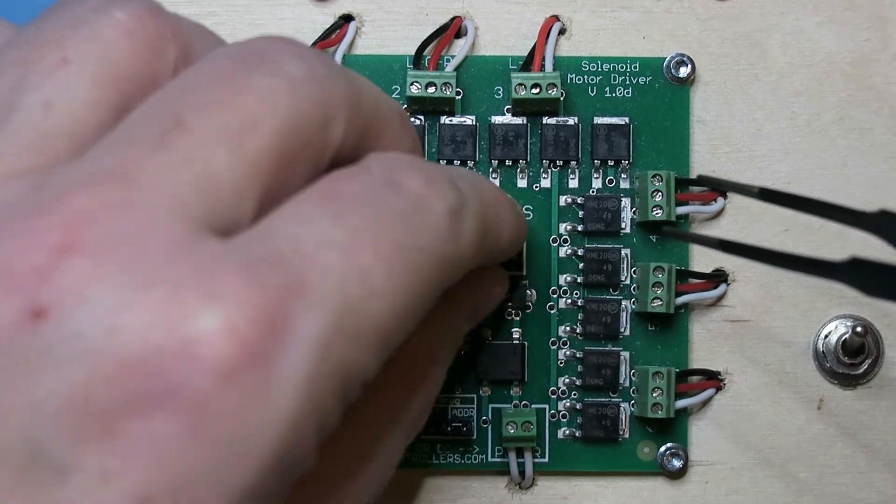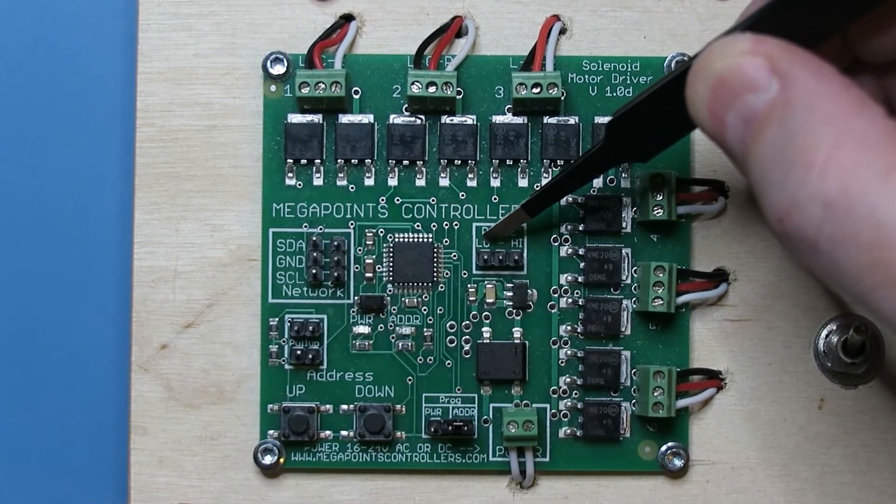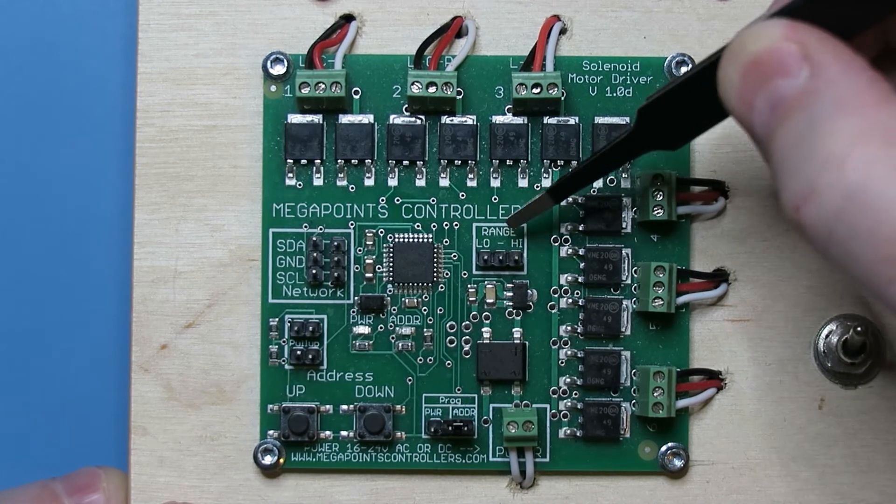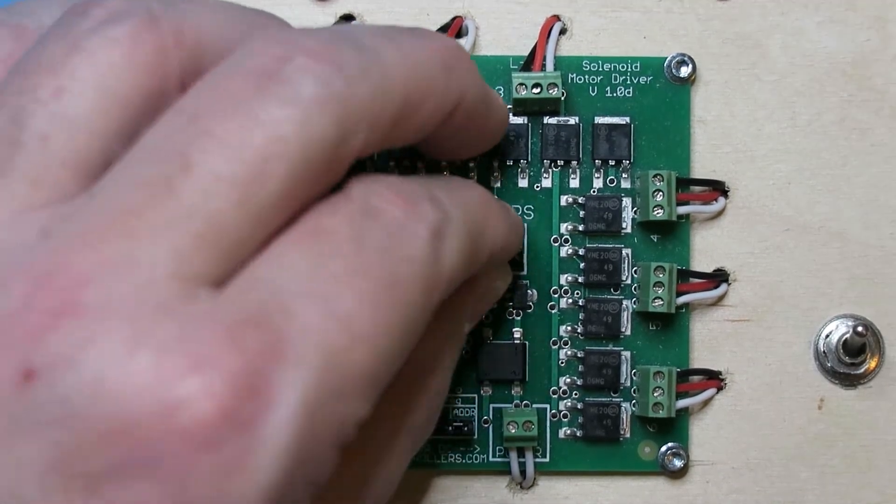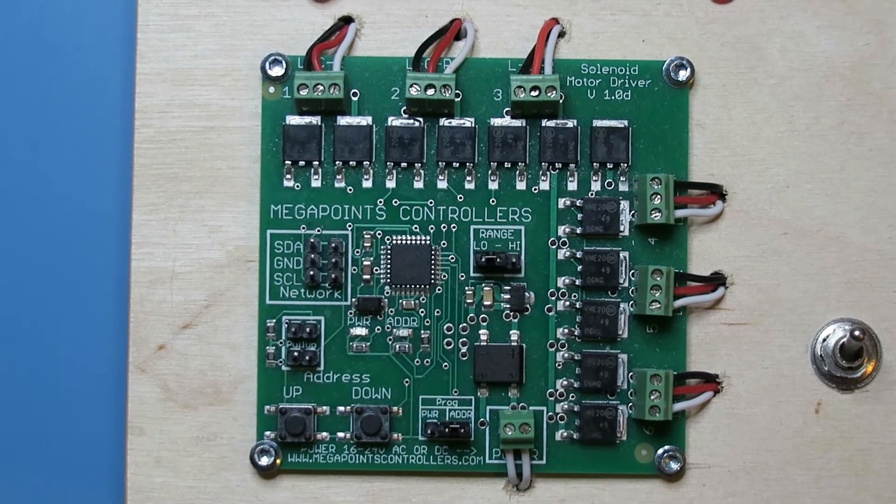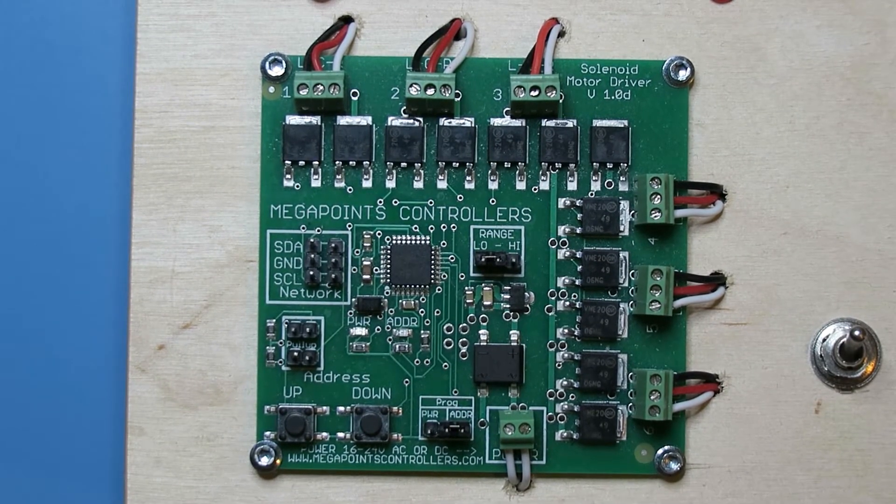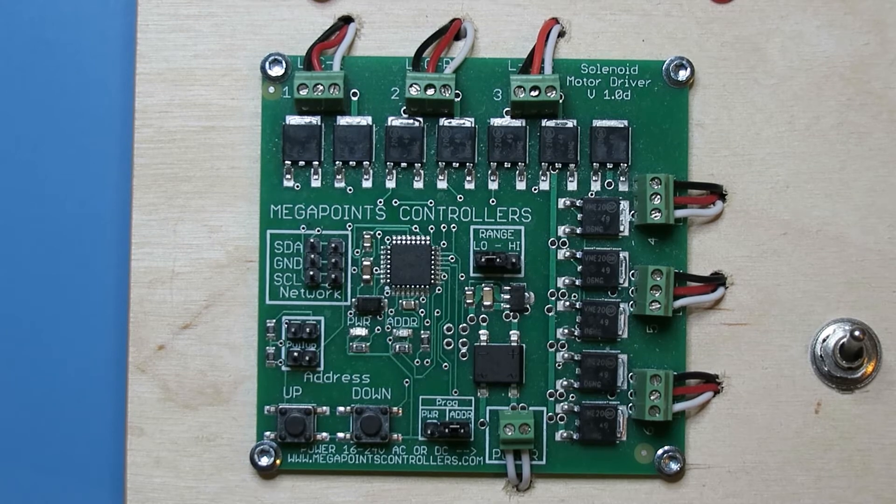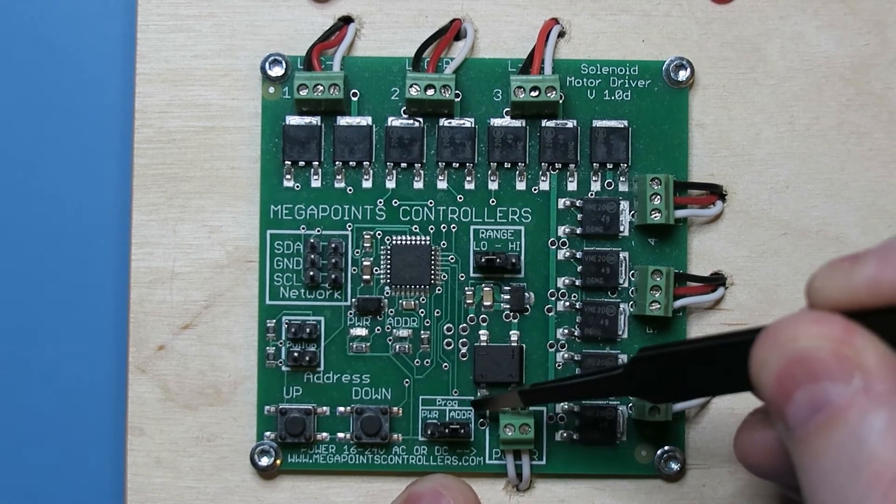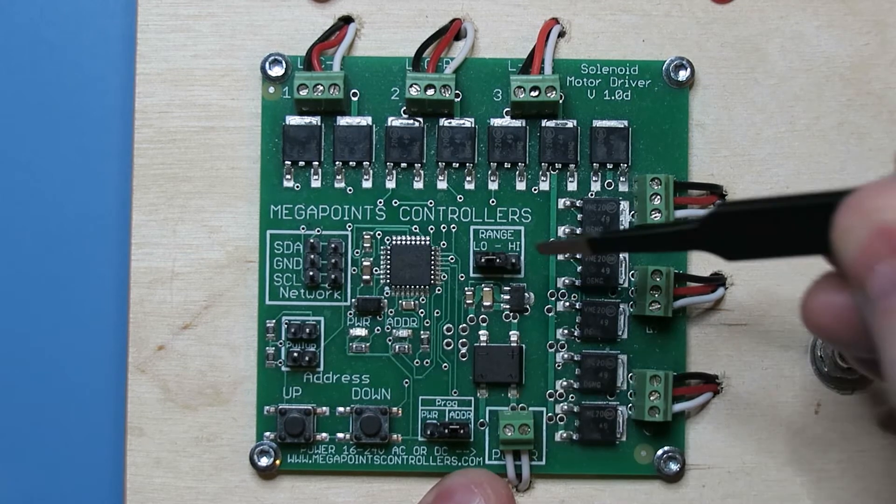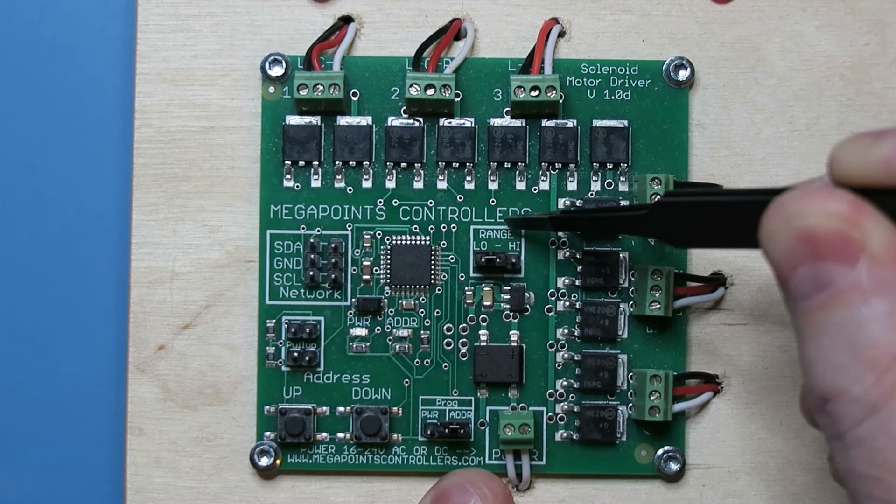And this jumper here sets the range for low or high, which is the first or the second six. So to set the board back to its default configuration before we start using it, you simply make sure that we have the jumper at the bottom on the address and the middle jumper to the left on the low.